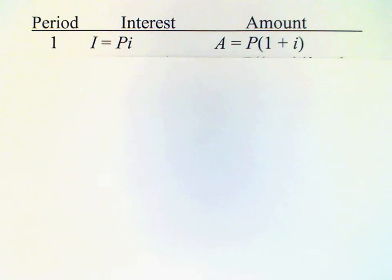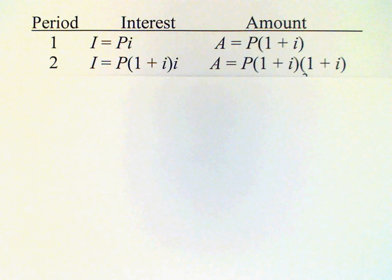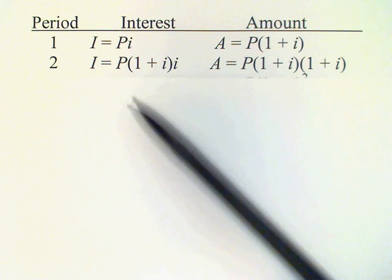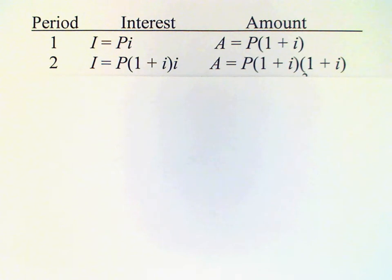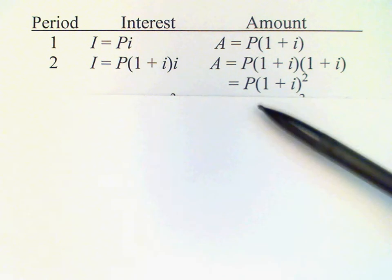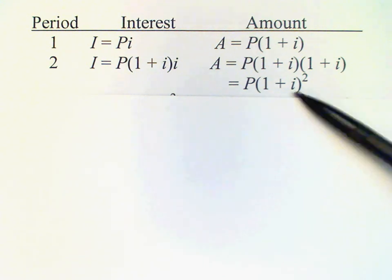This now becomes the principal in the second period, and so the interest that we earn in the second period is P times one plus i times i. If we add that interest in, then we get another factor of one plus i, and that can be simplified to P times one plus i raised to the second power.